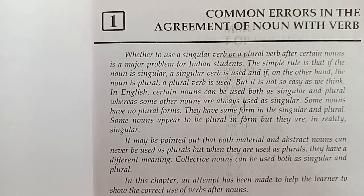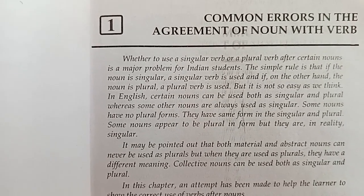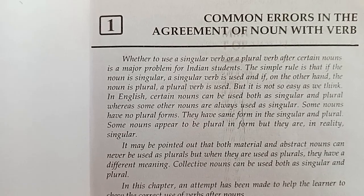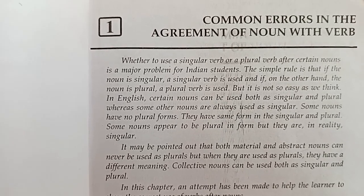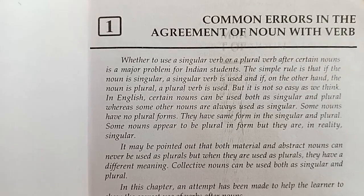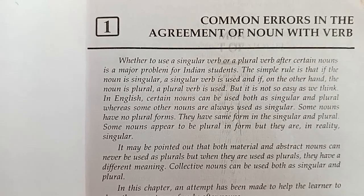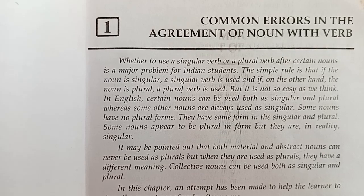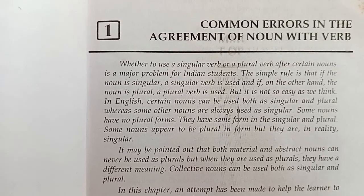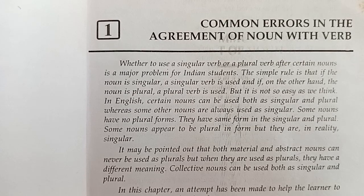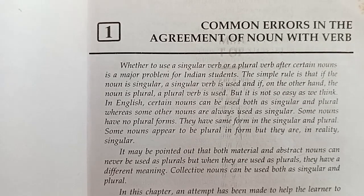In English, certain nouns can be used both as singular and plural. Whereas some other nouns are used as singular only, some nouns have no plural forms — they have the same form in singular and plural. Some nouns appear to be plural in form but they are in reality singular.